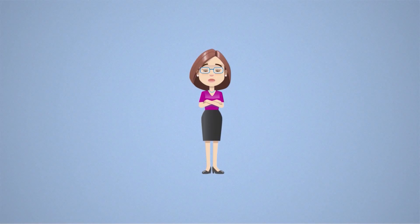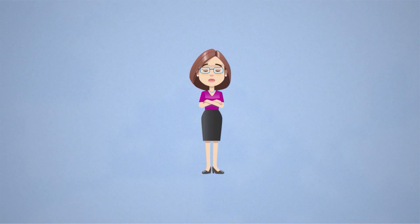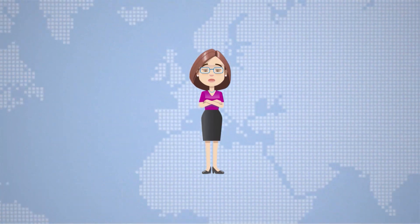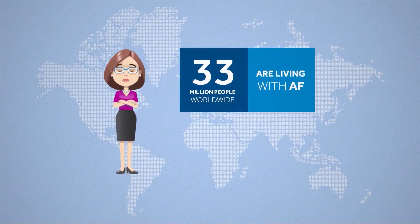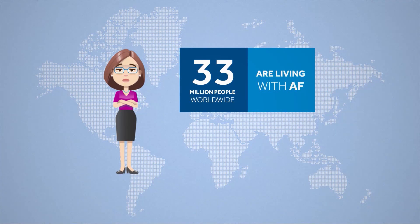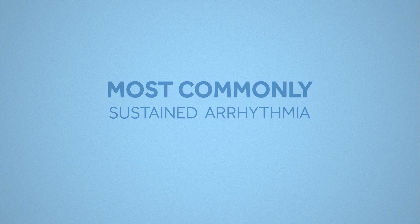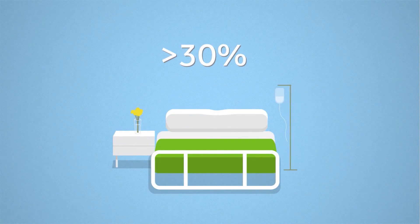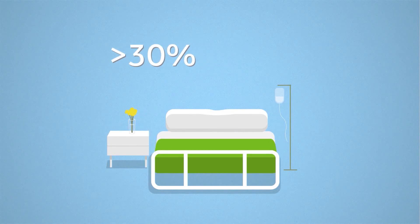Lisa has been diagnosed with AF, but she is not alone. AF is the most common type of irregular heartbeat and an estimated 33 million people worldwide are living with AF. AF is the most commonly experienced sustained arrhythmia. More than 30% of hospitalized heart patients have AF.